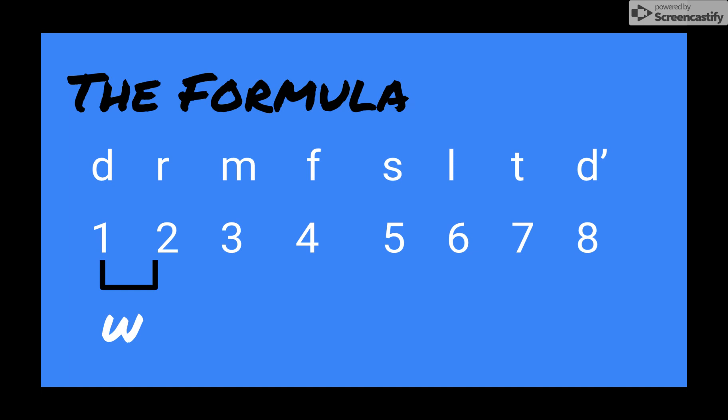Between Re and Mi, or scale degree 2 and 3, we have another whole step. Between 3 and 4, however, we have a caret which represents our half step. So our first half step is between 3 and 4, or Mi and Fa.